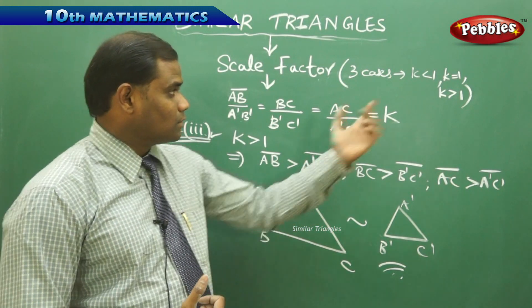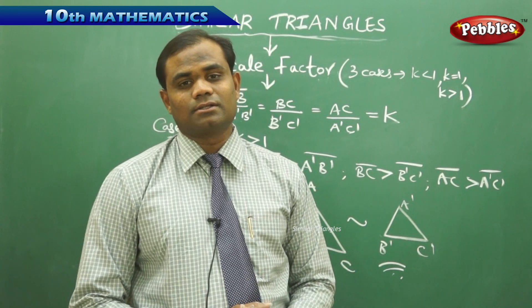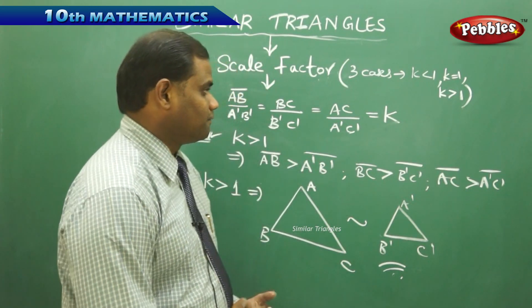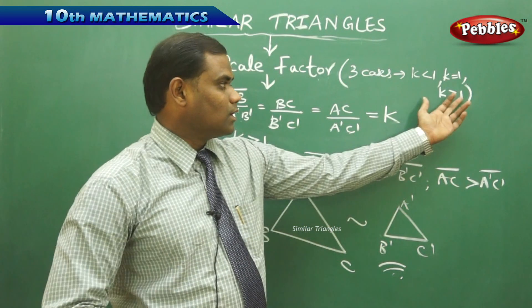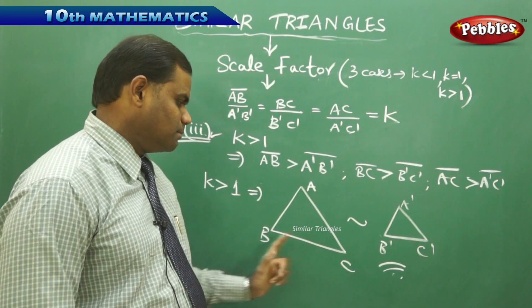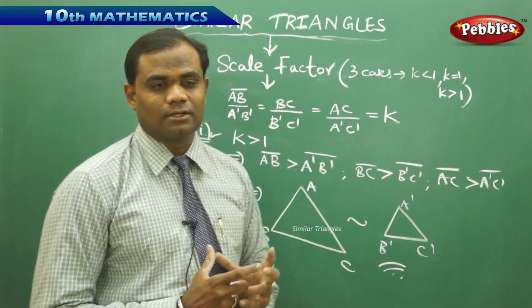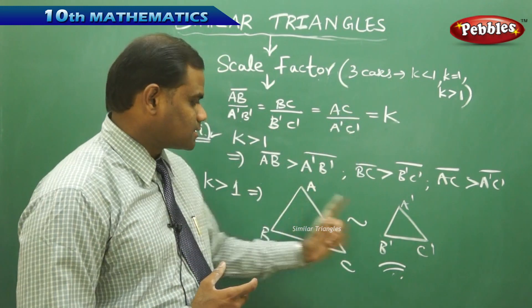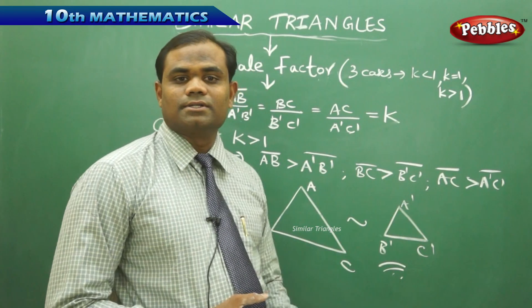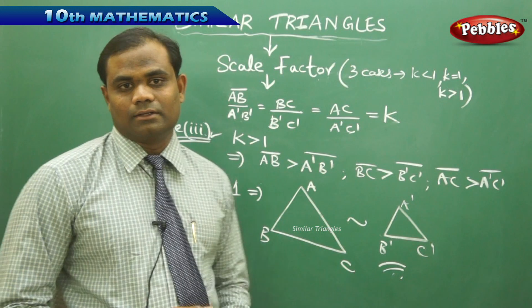For k less than 1, the original triangle is smaller than the enlarged triangle A'B'C'. For k equal to 1, the two triangles are equal in size — that is, they are congruent. When k is greater than 1, we get a diminished image of the original triangle ABC where it shrinks with all its sides reduced. Each side is reduced in size relative to the original triangle.